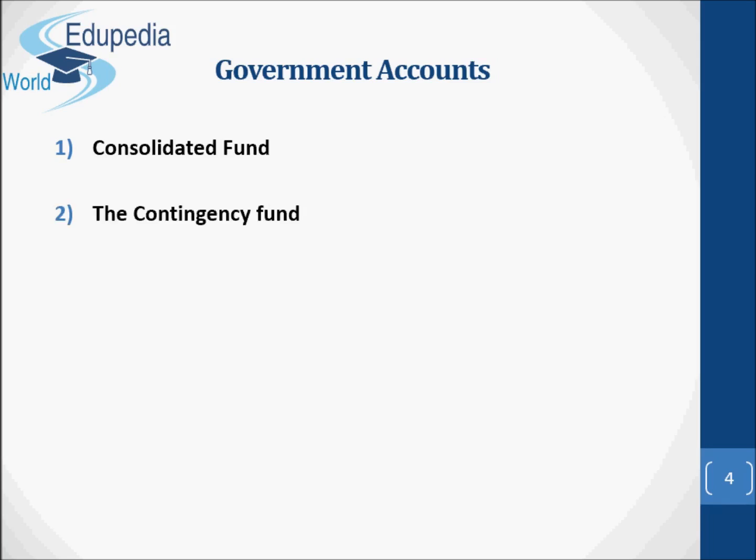No amount can be withdrawn from the Consolidated Fund without the sanction of parliament, according to Article 266(1). The Contingency Fund is placed at the disposal of the President to enable the government to meet unforeseen emergencies. Prior sanction of parliament is not required to spend from this fund — Article 267.